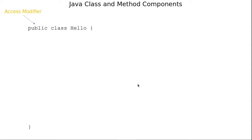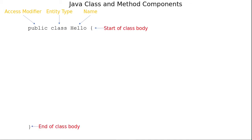The word 'public' is the access modifier — we're declaring this class as public, putting no restrictions on other programs or individuals who want to run it. 'Class' is the entity type — for now we can think of a Java class as a Java program, though there are other entity types like interfaces and enums. 'Hello' is the name of the class, and there are conventions and rules for naming classes which we'll cover later. The curly brackets mark the start and end of the class body — anything between them, the properties and methods, makes up the body.